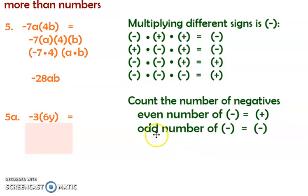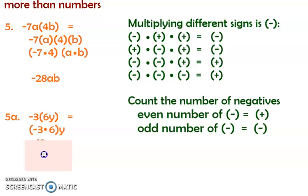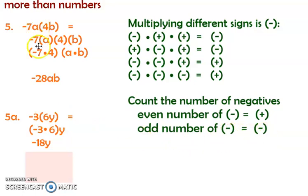Here's another one. With the commutative property we can rearrange: negative 3 times 6 is negative 18, and that's all times y still. One negative is an odd number, so the answer is negative — negative 18y. Those are all like examples number five.